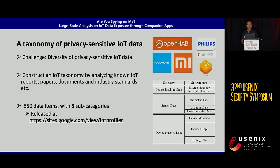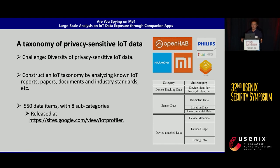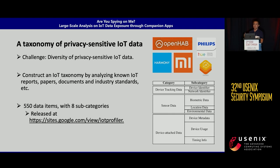The first module is a taxonomy of privacy-sensitive IoT data. Compared to mobile data that can often be fingerprinted with sensitive APIs, IoT data is diverse due to the wide variety of IoT devices. In our study, we analyzed a wide spectrum of IoT data and created an IoT taxonomy by analyzing IoT reports, papers, documents, and industrial standards. This resulted in the largest IoT data taxonomy we are aware of, spanning multiple data categories. We also make this taxonomy open to the public for future research.